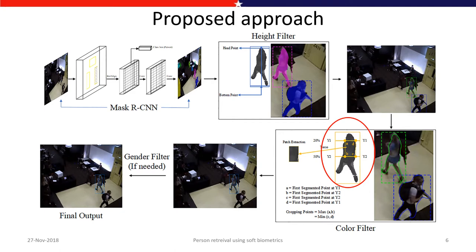This is the proposed approach diagram. Initially, persons are detected using Mask RCNN, which provides semantic segmentation and bounding boxes for all detected persons. All soft biometric traits — height, color, and gender — are used as sequential filters. Persons detected by Mask RCNN are first passed through the height filter, where all person heights are estimated using detected head and foot points. Only persons matching the query height class remain, as shown in the first row where only two persons remain after the height query.